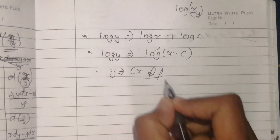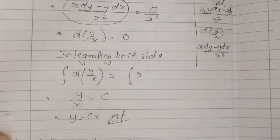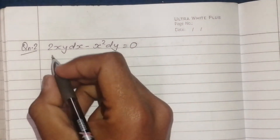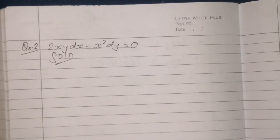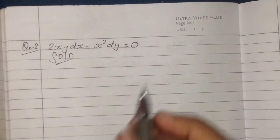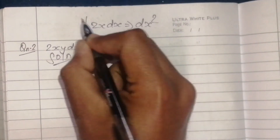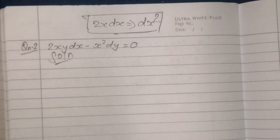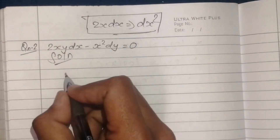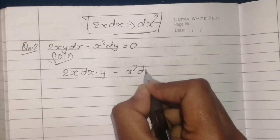Now for question number two, process one. The formula is applied. The equation is: 2x·dx·y minus x square·dy is equal to 0. This is the starting equation.